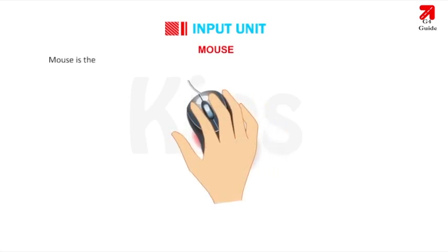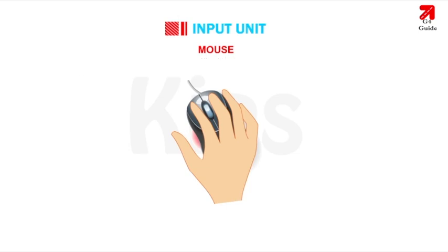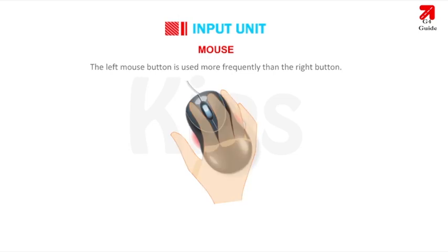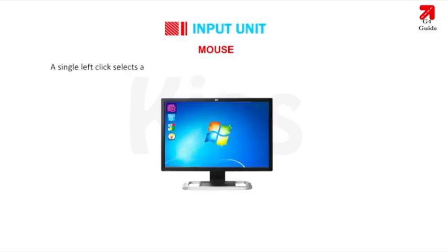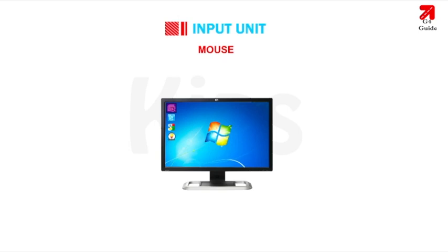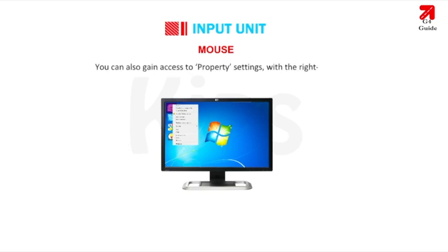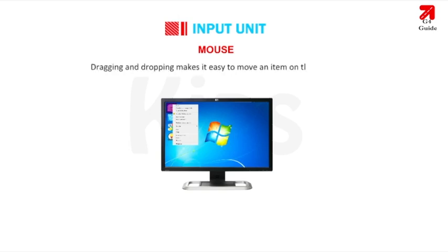Mouse is the most commonly used input and pointing device that lets you select and move items on the screen. The left mouse button is used more frequently than the right button. A single left click selects an item while double clicking activates the application. The right click often displays a list of commands and can also give access to properties settings.